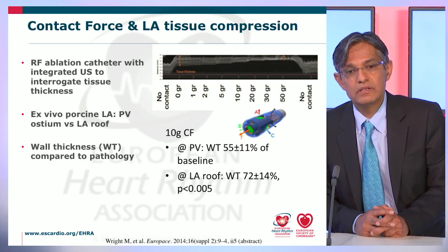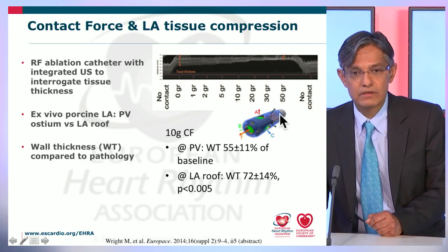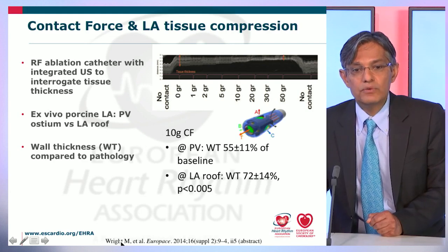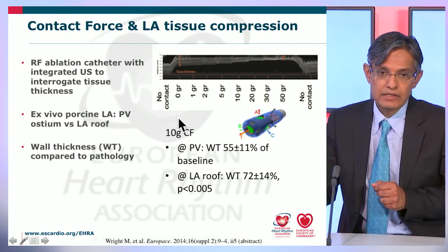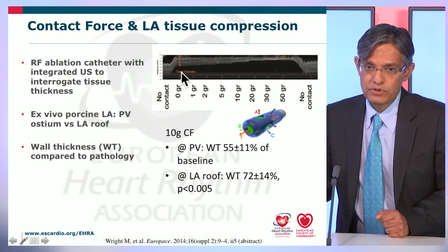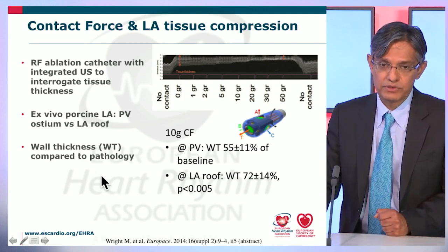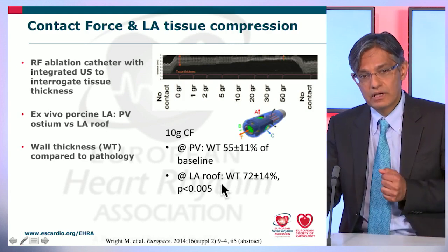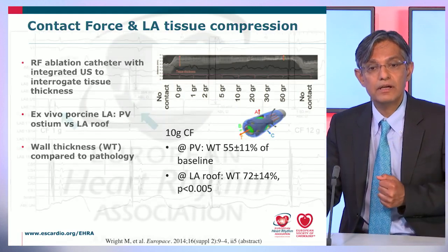The exact mechanism of increasing contact force and control of lesion size remains to be conclusively shown, but we have some insights. Using a catheter with an integrated three-dimensional ultrasound sensor, Matthew Wright performed experiments in ex vivo porcine left atrium, pushing a catheter with 10 grams of contact force against the PV ostium and the left atrial roof. He found that 10 grams contact force reduced wall thickness by 25% at the PV ostia, whereas the same force reduced it to a lesser extent at the left atrial roof, suggesting tissue compression was important but also that regional differences exist.